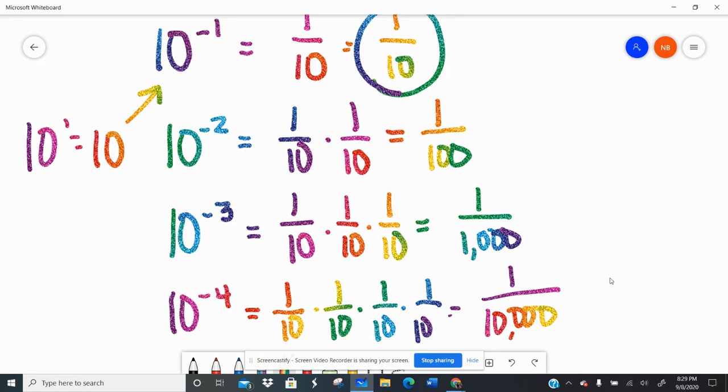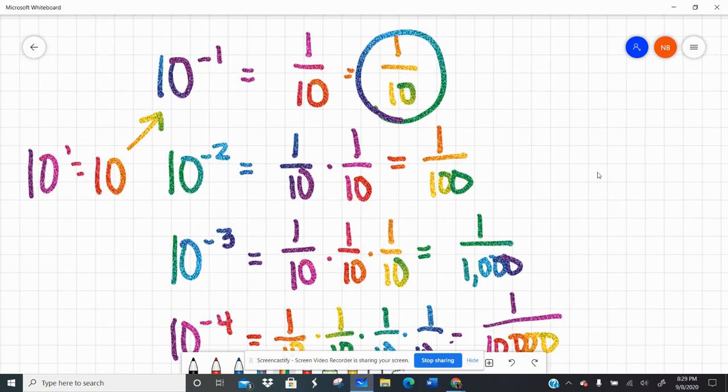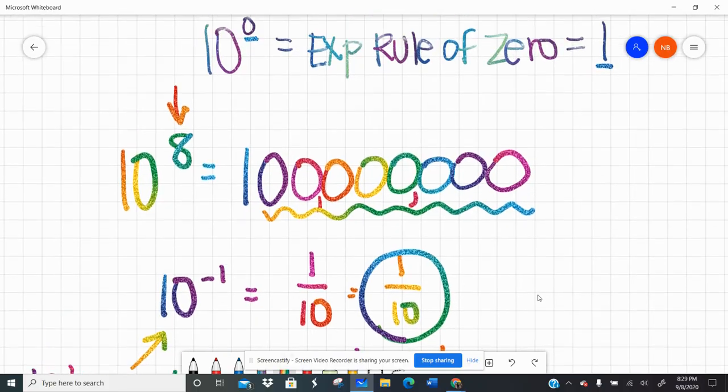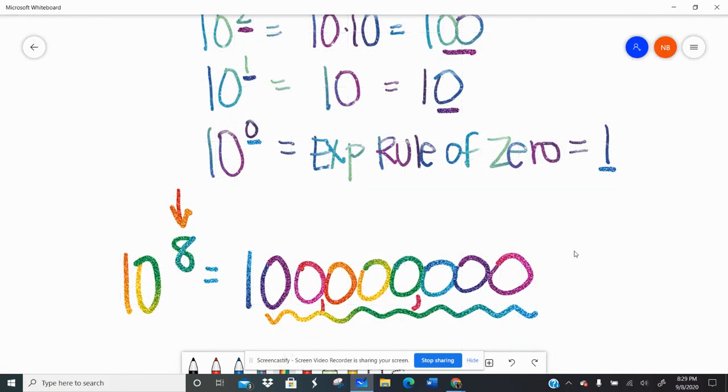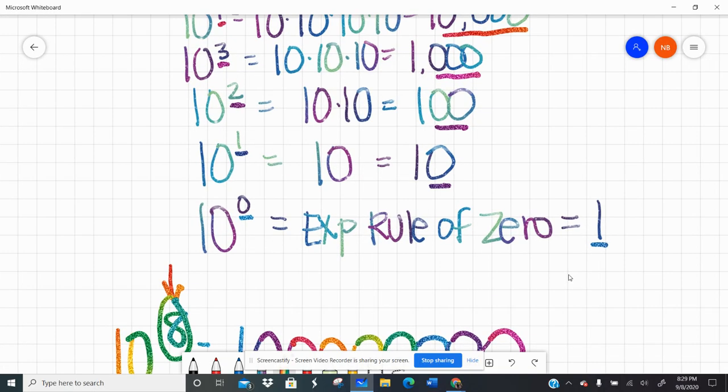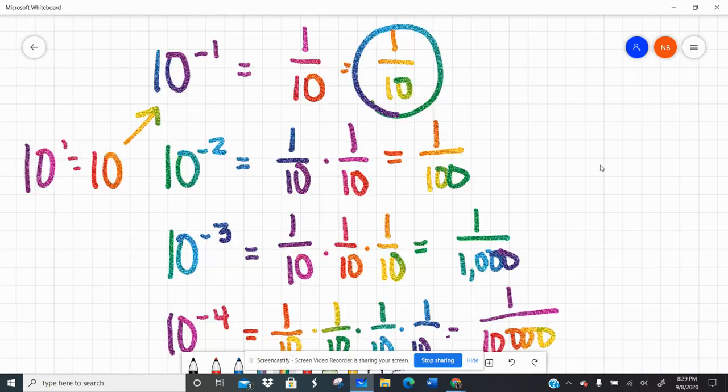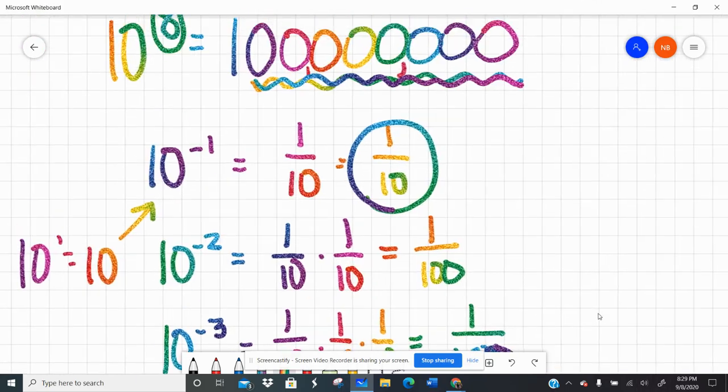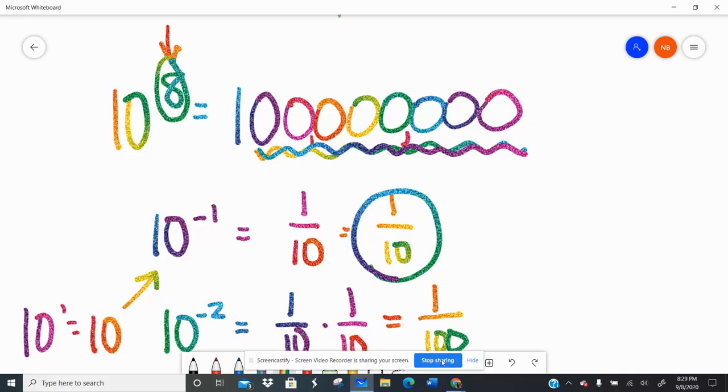So if you have any questions, let me know. But remember to follow the rules of powers of 10. The exponent tells you how many zeros after the 1. If it's positive, it's going to be a big number. If it's a negative exponent, it's going to be a small number. All right. Talk to you later. Bye.